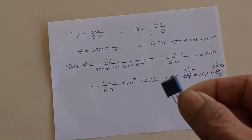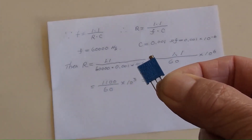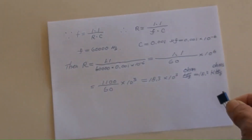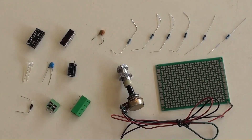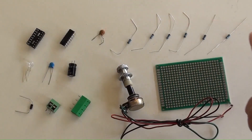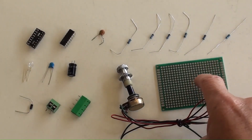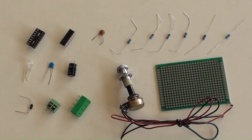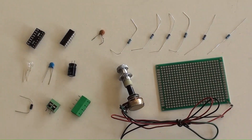An 18.3 kΩ resistor is not a common value. It is practical to choose a 25,000 or 50,000 Ohm potentiometer instead. Those parts will be used and soldered on this PCB board to make a simple TL494 oscillator with variable frequency, using a potentiometer as an adjustable resistor.